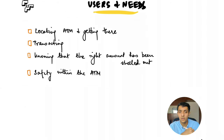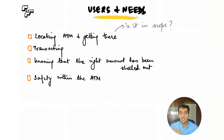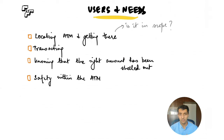Now I need to look at these needs and pick one or two to focus on. When I look at the first need — locating and getting to the ATM — it's important, but I have two concerns. First, as a bank, can we really solve a transportation problem? Second, should our first priority be designing the in-ATM experience, with location as a secondary priority? So I'd prioritize this need a little lower, even though it does matter.